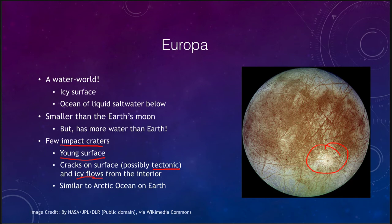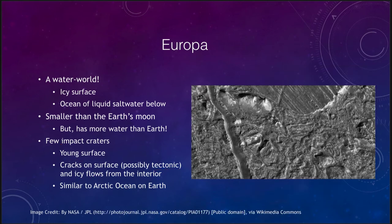Io had no craters because of volcanic activity; Europa gets icy volcanic activity where icy material flows up through cracks and fills in any craters that form. In a way Europa is similar to the Arctic Ocean on Earth, with a thick layer of ice over liquid salt water. Looking more closely you can see signs of various flows and areas where the ice has recrystallized, with streaks where material has welled up from inside and filled in the lower-lying areas — much as our moon was filled in with lava, Europa has been filled in with icy flows from beneath its surface.